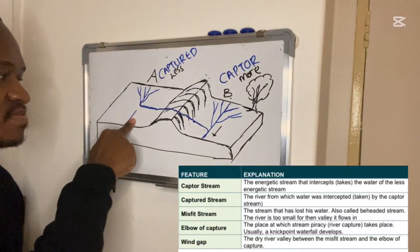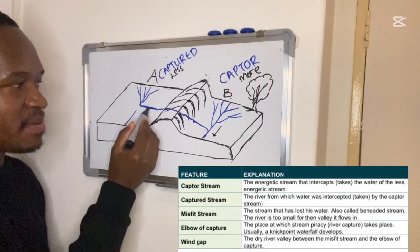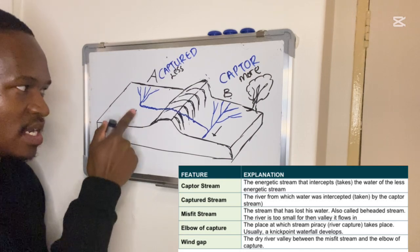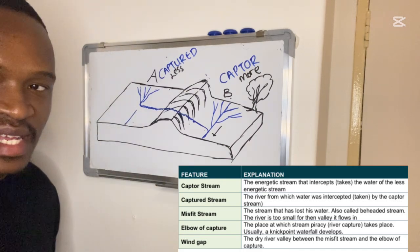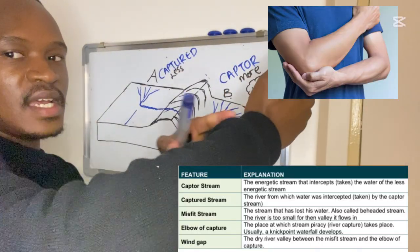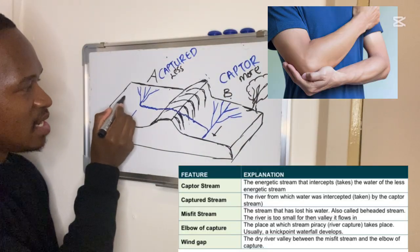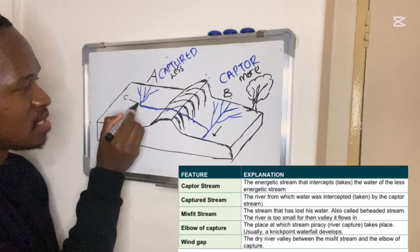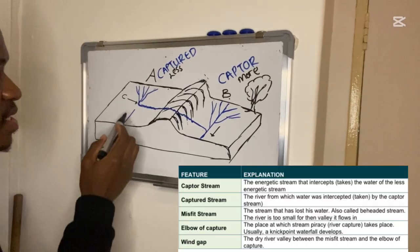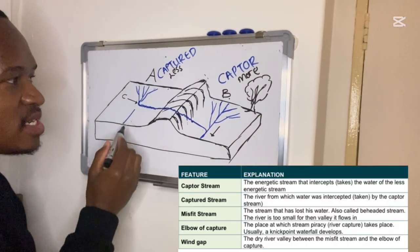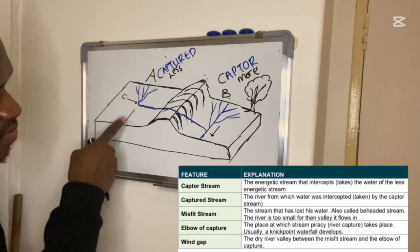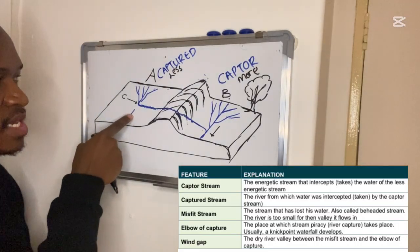Looking at the point where river A was captured — where the river changes direction — this is known as the elbow of capture, labeled C. It is the bend or elbow in the river where stream piracy or river capture took place.